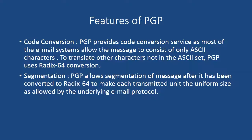Regarding the features of PGP: first, code conversion — PGP provides a code conversion service, as most email systems allow messages to consist of only ASCII characters. To translate characters not available in the ASCII set, PGP uses Radix-64 conversion. Second, segmentation — PGP allows segmentation of the message after it has been converted to Radix-64 form, making each transmitted unit a uniform size as allowed by the underlying email protocol.